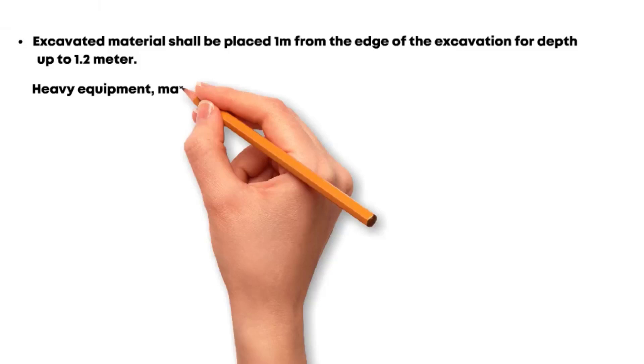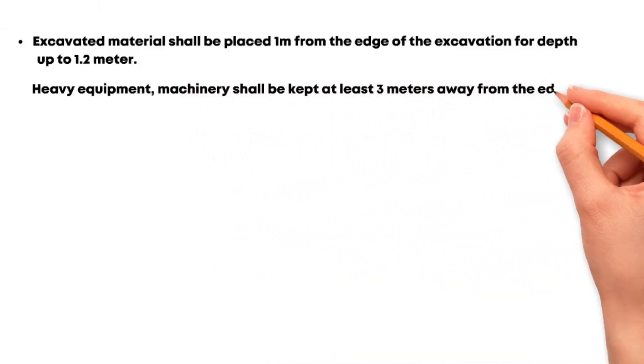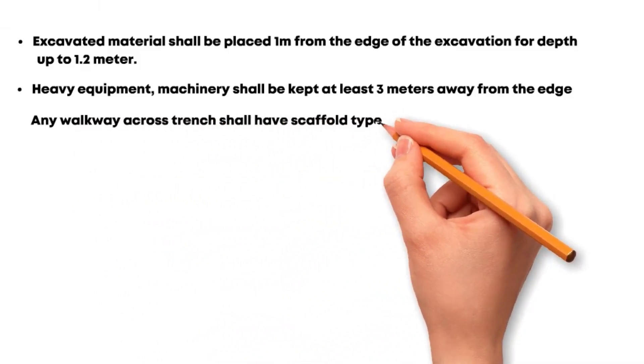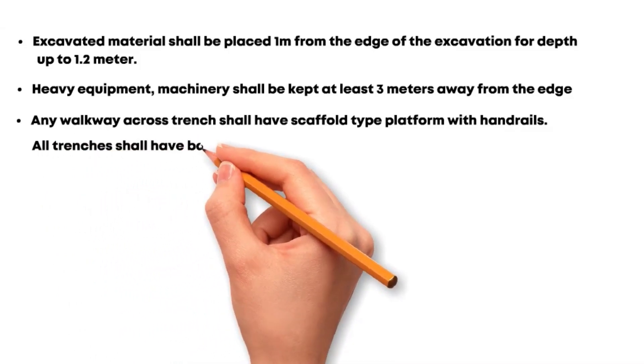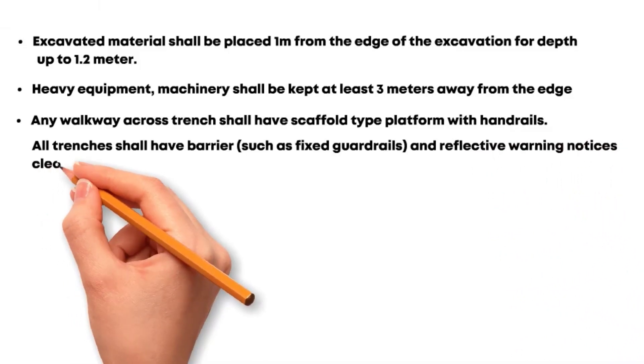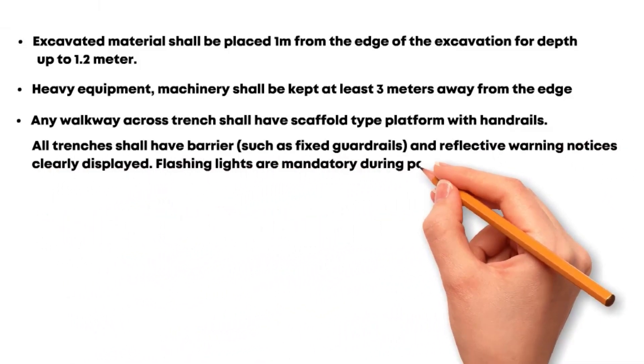Heavy equipment machinery shall be kept at least three meters away from the edge. Any walkway across trench shall have scaffold type platform with handrails. All trenches shall have barriers such as fixed guard rails and reflective warning notices clearly displayed. Flashing lights are mandatory during poor visibility.